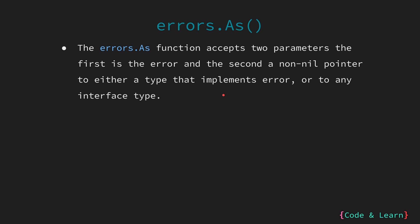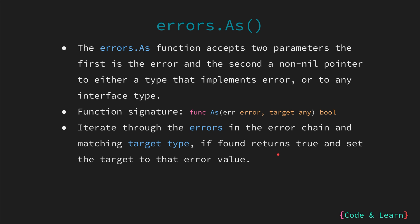Now let's look at the errors.As function. It accepts two parameters: first is the error itself, and the second is a non-nil pointer to either a type that implements error or to any interface type. The signature is: func As(error, target any) returning bool. errors.As finds the first error in the error chain that matches the target type; if one is found, it sets the target to the error value, otherwise it returns false. A custom error matches the target if the error's concrete value is assignable to the value pointed by the target, or if the error has an As method that returns true. Please note: errors.As will panic if target is not a non-nil pointer to either a type implementing error or any interface type.